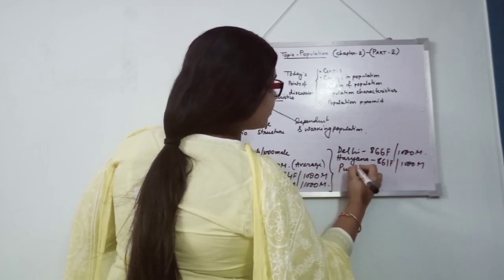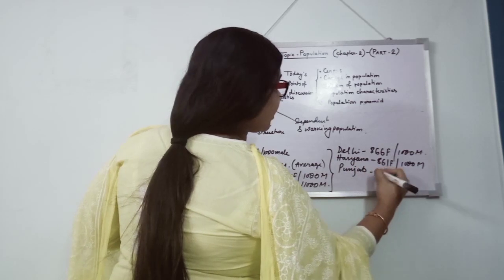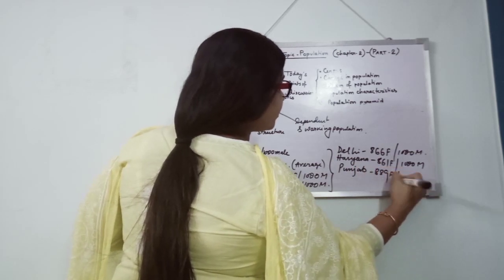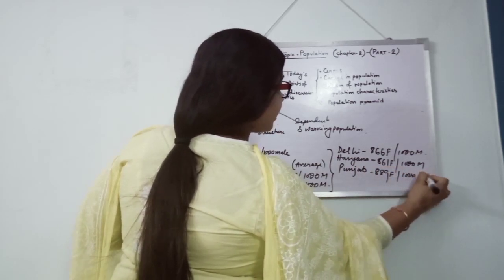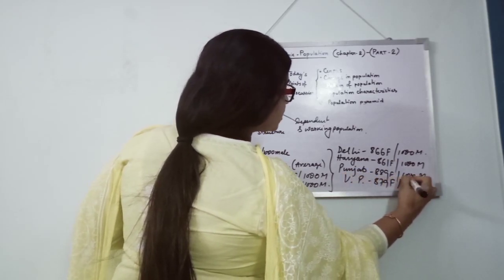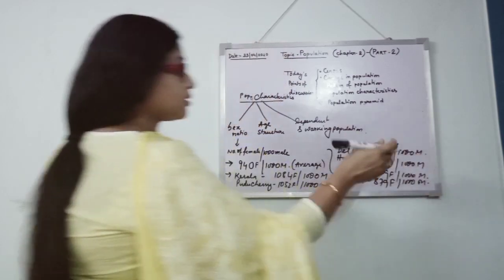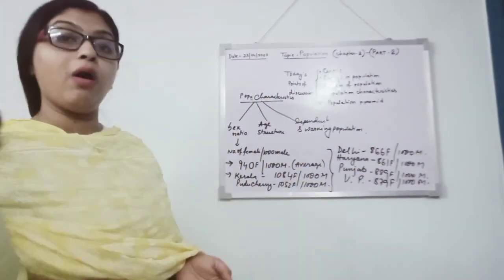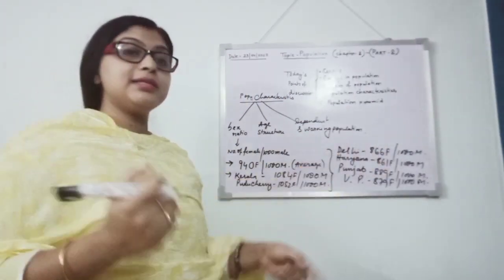Punjab, 889 females per thousand males. UP, 879 females per thousand males. I am only giving the example of the NCR region.